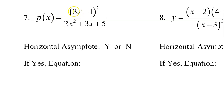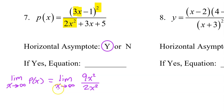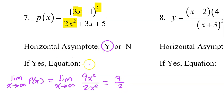Number 7, just look at the leading term 3x. Don't forget that it is squared. And in the denominator, we have the leading term 2x squared. The right-end behavior will be the limit as x approaches infinity of 9x squared — that's 3x to the second power — divided by 2x squared. But then the x squared will cancel, and you are left with a limit of 9 halves. So the horizontal asymptote will be y equals 9 over 2.